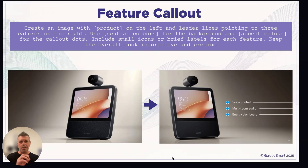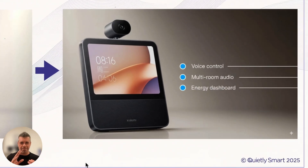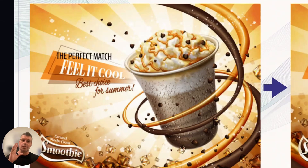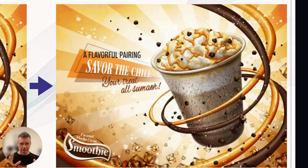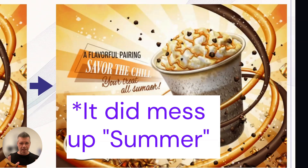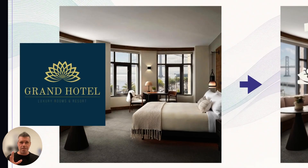Here's another example where it's taking the image and calling out the features you want from it — it did a perfect job using text and the main features of the product. This one is a great example of Nano Banana nailing typography: it used exactly the same fonts and the same kind of layout without making any mistakes. That's really cool.